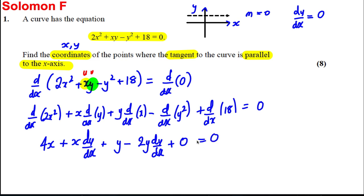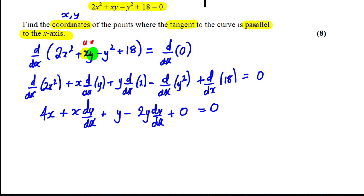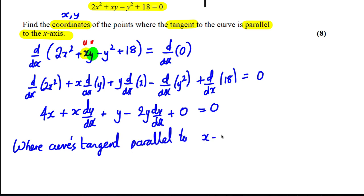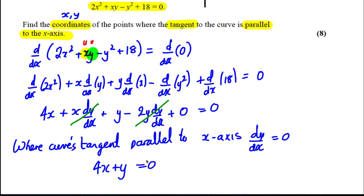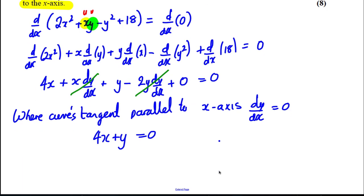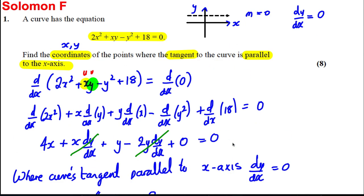Differentiating y² implicitly gives 2y·(dy/dx), and the constant gives zero, so everything equals zero. At this point, since dy/dx = 0 where the tangent is parallel to the x-axis, we can eliminate the dy/dx terms. This gives us 4x + y = 0, which means y = −4x. So the y value is always −4 times the x value — call this equation 2.